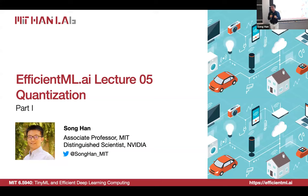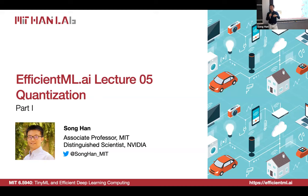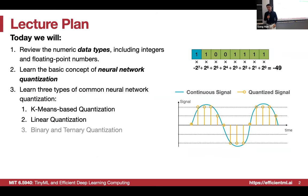As you remember, pruning reduces the number of weights. Now we want to reduce the number of bits for each weight. The total storage required equals the number of bits per weight times the number of weights. These techniques are quite important for modern deep learning. If you're running AI applications on a phone, it's very likely using quantization.